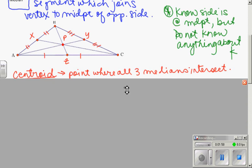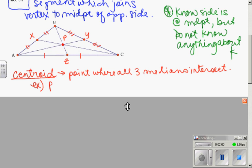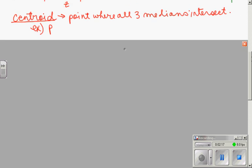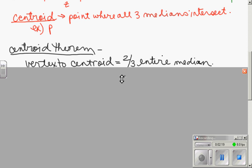Now, additionally, and you need to add these notes. They got cut off. A special point happens when you look at the medians, and that's called the centroid, and it's the point where all three medians intersect. So in our picture, the centroid is P. Now, the centroid has a really interesting property, and that is called the centroid theorem.